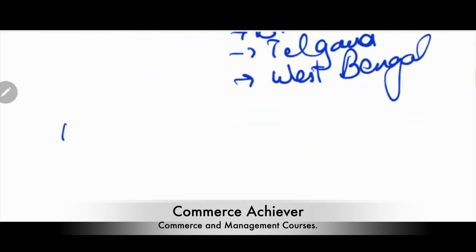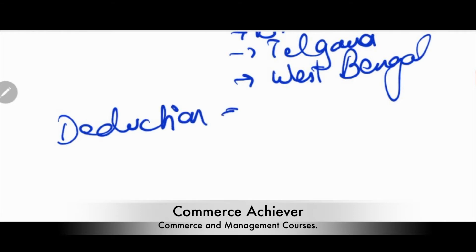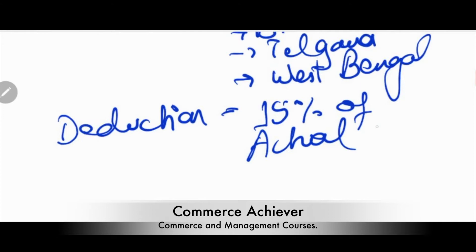If the conditions are satisfied, the deduction you will get is 15% of the actual cost of the asset. So the deduction is 15% of actual cost.